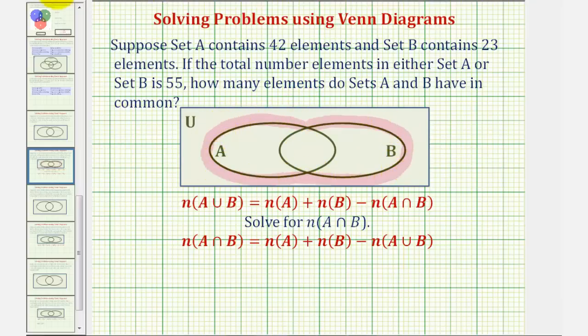This is equal to the number of elements in A, here's set A, plus the number of elements in B, here's set B, minus the number of elements in A intersect B, which would be the number of elements in this set here or this region here.